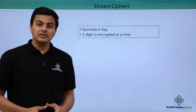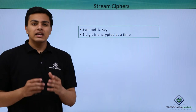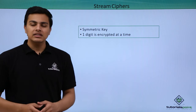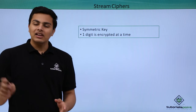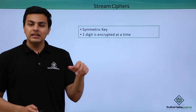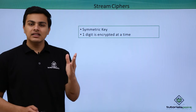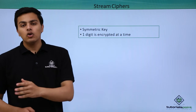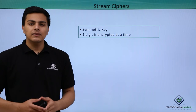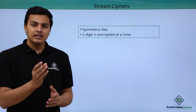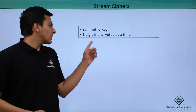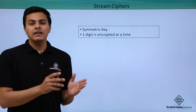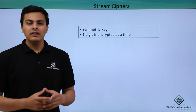So what are stream ciphers? Stream ciphers actually encrypt one digit at a time. For example, if our data contains five digits — H-E-L-L-O — the first digit H will be encrypted first, then E, then L, then another L, and then O. So in a stream cipher one digit is encrypted at a time, and the stream cipher contains only symmetric encryption, which means the key for encrypting and the key for decrypting the data will be the same.